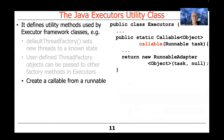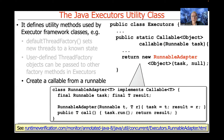There are also factory methods that can be used to create a callable from a runnable. In this particular case, what this does is create something called a runnable adapter. A runnable adapter converts a runnable into a callable — it uses null for the return value because there's no return value from a runnable, but sometimes we want to make it work with the callable APIs.